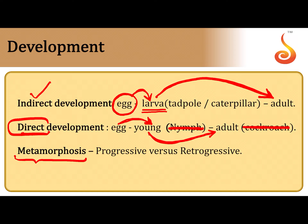Metamorphosis is when a larva transforms into an adult with a lot of changes involved. If the changes are progressive — that is, certain new structures are added to the larva during metamorphosis — we call it progressive metamorphosis. If a structure present in the larva is lost in the adult, such as the tail of a tadpole which is absent in the adult frog, we call such metamorphosis retrogressive metamorphosis.